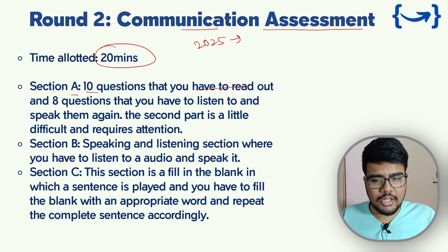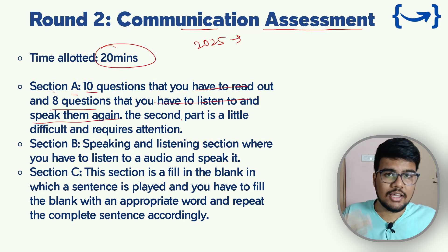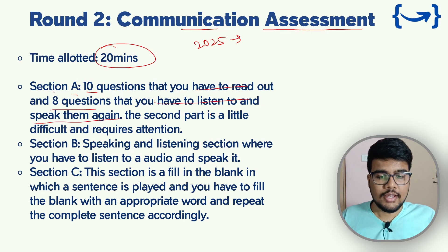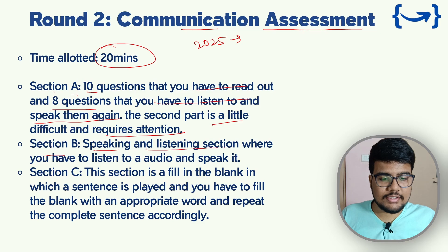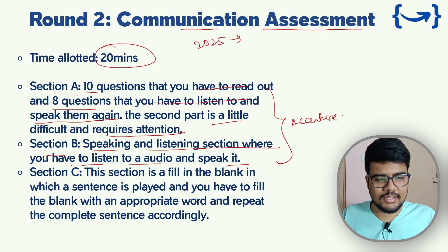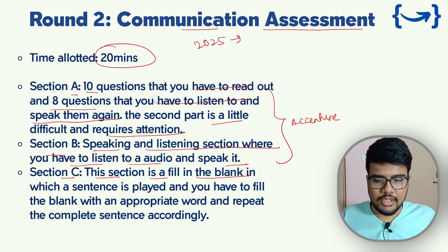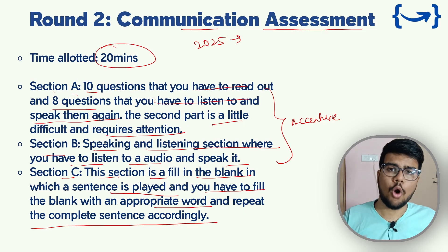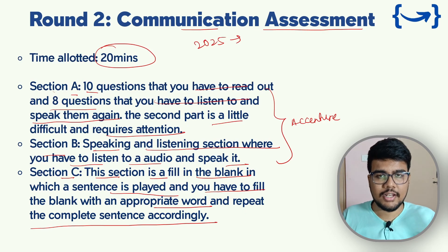Section A has 10 questions where you have to read out sentences, and 8 questions where you listen and then speak again to demonstrate your speaking skills. Section B is a speaking and listening section — you listen to an audio and then speak it back. This is similar to Accenture Essential communication preparation. Section C is a fill-in-the-blank section where a sentence is played and you have to fill the blank with an appropriate word, then repeat the complete sentence.